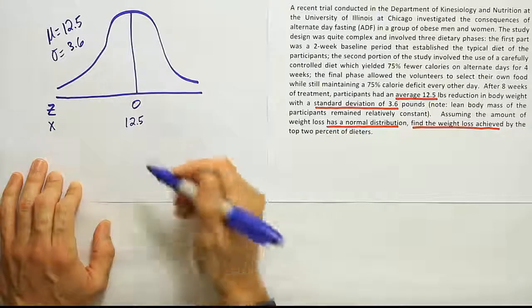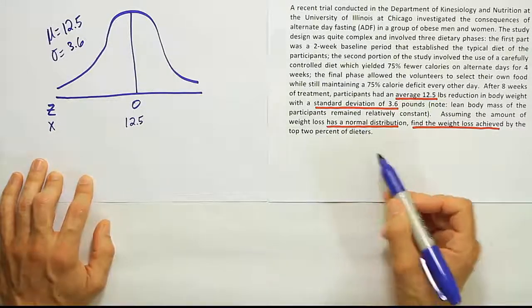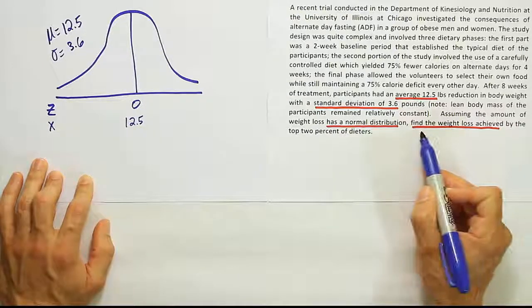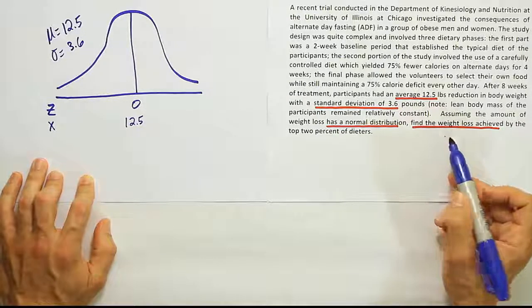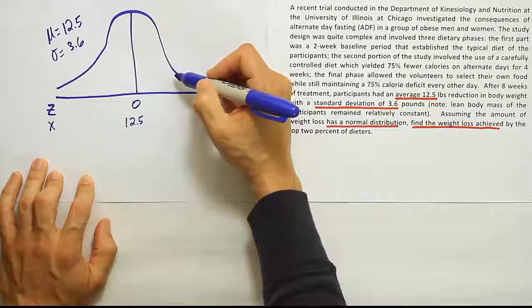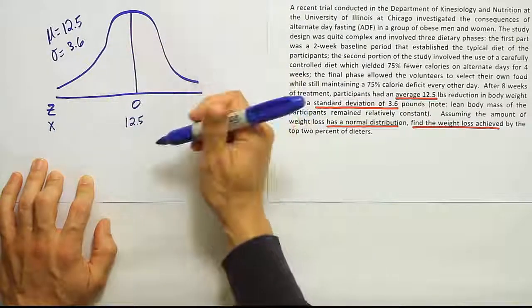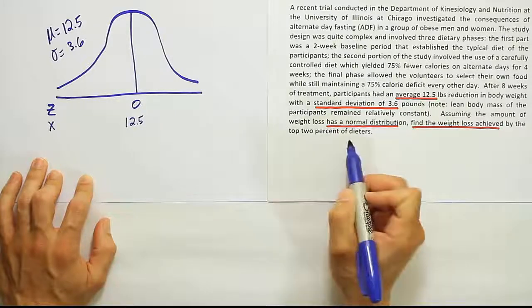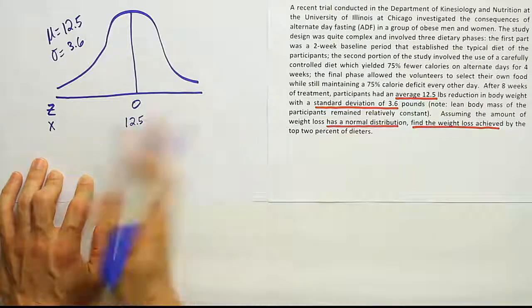And we're trying to find the weight loss achieved by the top 2% of dieters. This doesn't say find the probability. It says find the weight loss. Remember, if it doesn't say find the probability, we're using the table backwards. And we're basically trying to figure out where we should cut the table so that we leave the amount they're talking about, in this case the top 2% of dieters, separated from all the others.